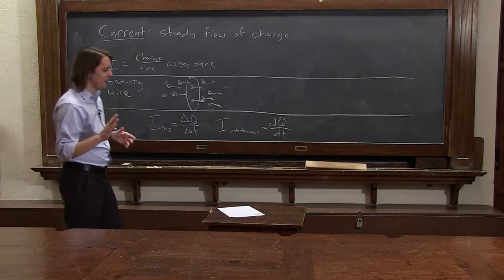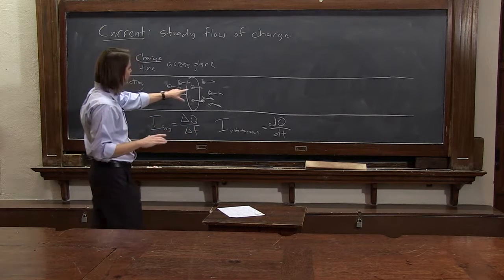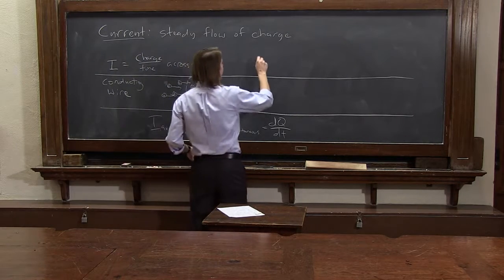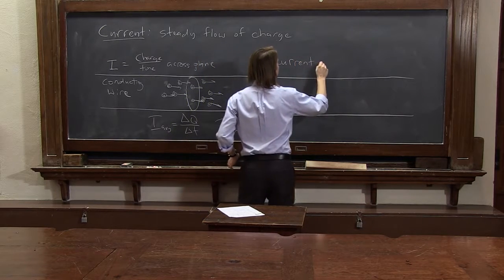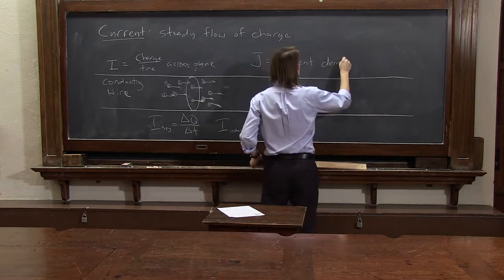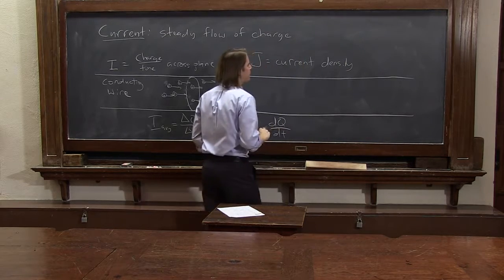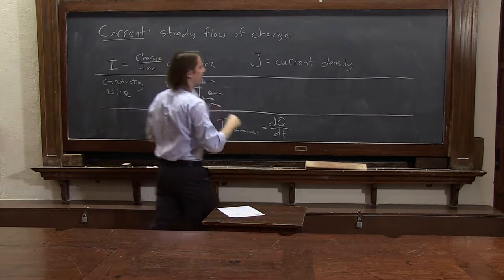There's another current we sometimes think about, and that's where you do take into account this area. That's called J. That's the current density. And it's literally just the current per unit area.